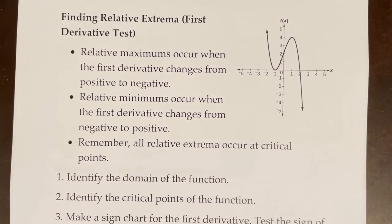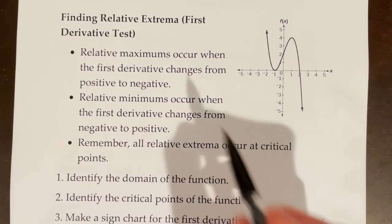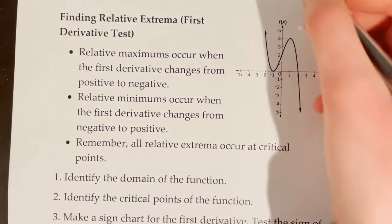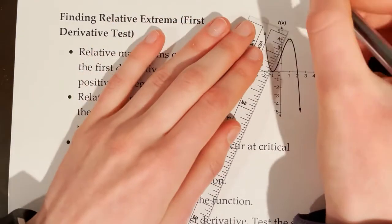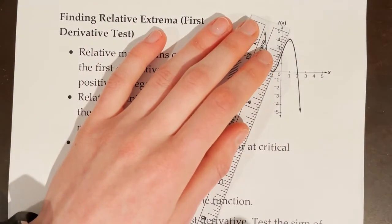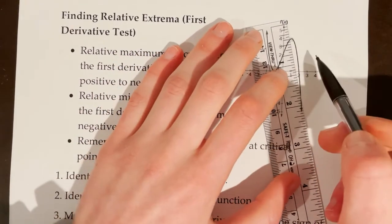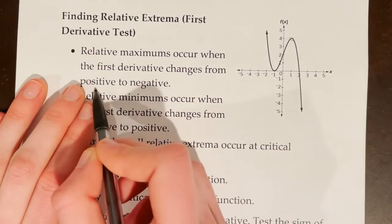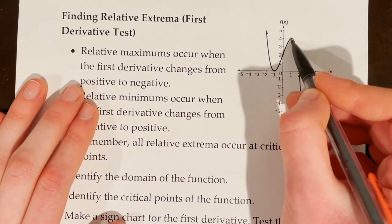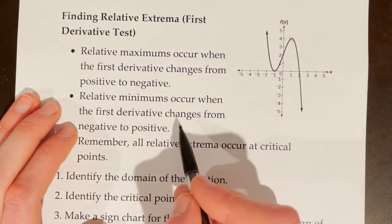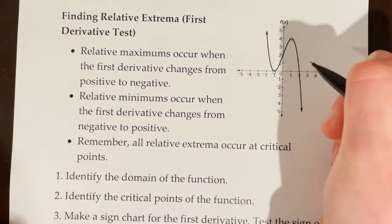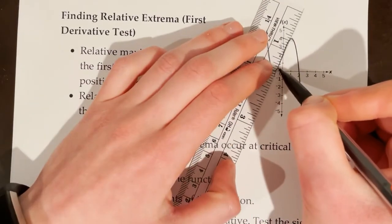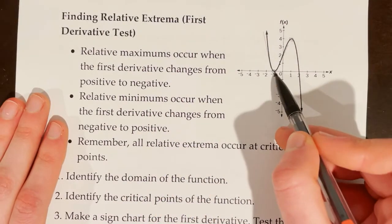In order to find relative extrema algebraically, we use what's called the first derivative test. Relative maximums occur when the first derivative changes from positive to negative. This makes sense because on the left side of a relative maximum, the slopes of the tangent lines are positive, and on the right side they are negative. Relative minimums occur when the first derivative changes from negative to positive — the slopes go from negative on the left to positive on the right.